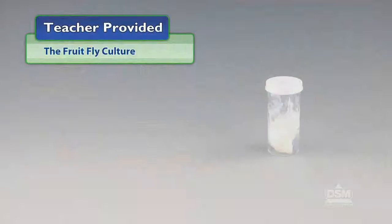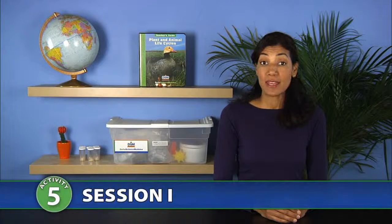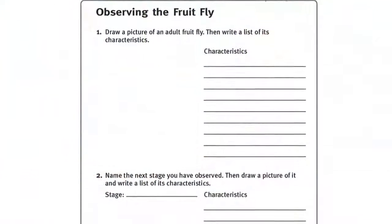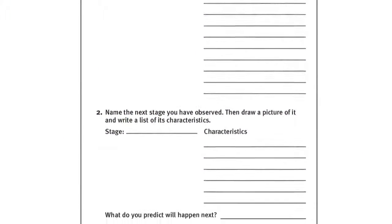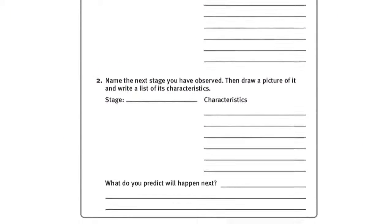You will also need to provide the fruit fly culture. To prepare for Session 1, make a copy of Activity Sheet 5 Part A for each student. For each team of two, make a copy of the fruit fly egg picture included in the fruit fly life cycle picture set.